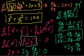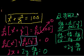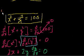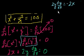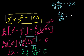Now we can solve for dy/dx. We have 2x plus 2y·(dy/dx) equals 0. Subtracting 2x from both sides gives 2y·(dy/dx) equals minus 2x. Dividing both sides by 2y, the 2's cancel and we get dy/dx equals minus x over y.